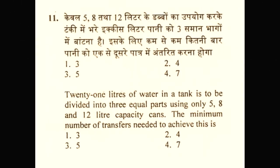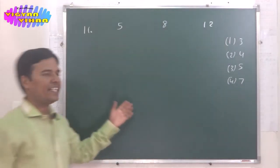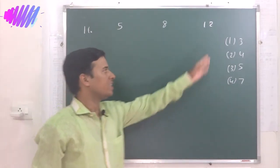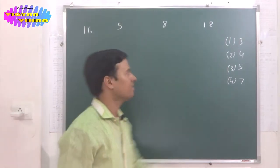Here is the first problem of this episode — problem number 11. 21 liters of water in a tank is to be divided into 3 equal parts using 5, 8 and 12 liter capacity cans. The minimum number of transfers needed to achieve this is: option 1: 3, option 2: 4, option 3: 5, option 4: 7. We will have to find the correct answer from the given options.